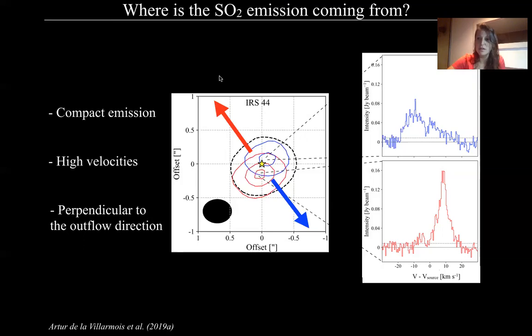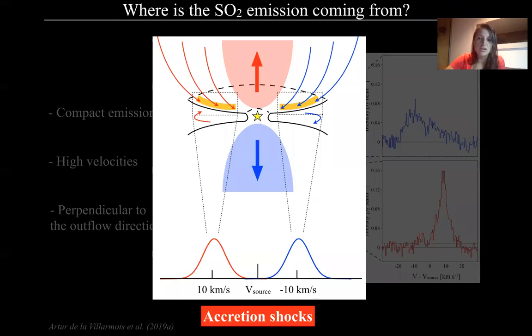So we propose that the SO2 is tracing accretion shocks. And this will be shocks located at the interface between the inner envelope and the disk surface. And so we have infall from the envelope to the disk that is somehow reflected in SO2 emission. And also the disk tracers are giving us an idea of the mass accretion rate from the disk to the protostar.